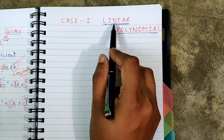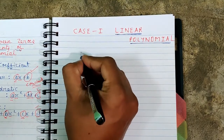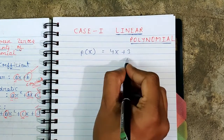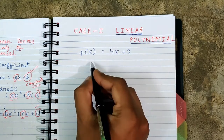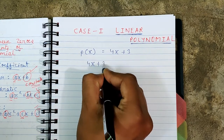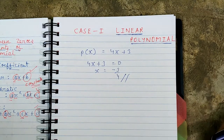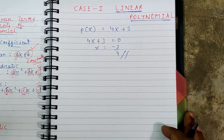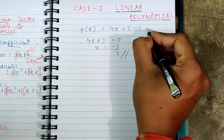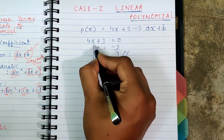Let us see case number one: establishing the relationship between zeros and coefficients for a linear polynomial. Let us take a simple example: p(x) = 4x + 3. Using the algebraic method, we suppose the equation 4x + 3 = 0, which gives x = -3/4. This is the zero of the polynomial. Now let us establish a relationship between this zero and the coefficients.